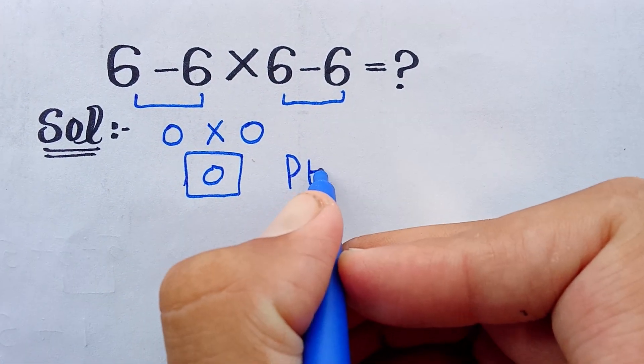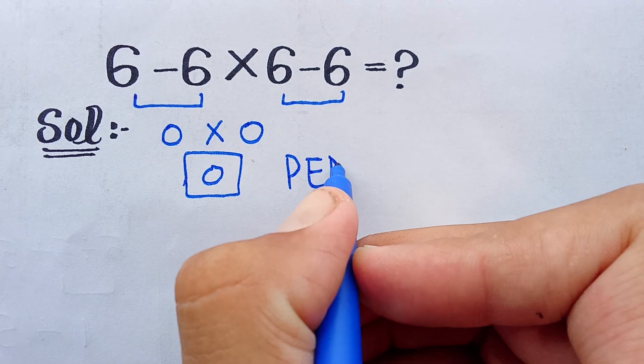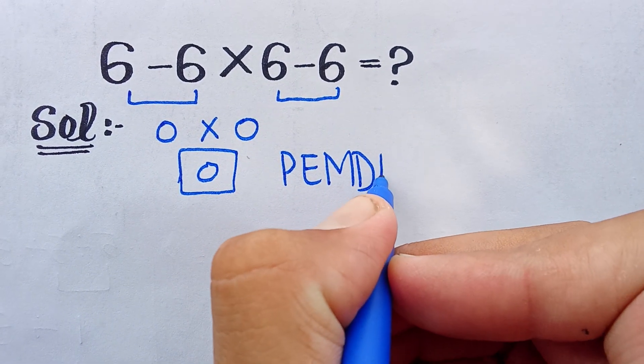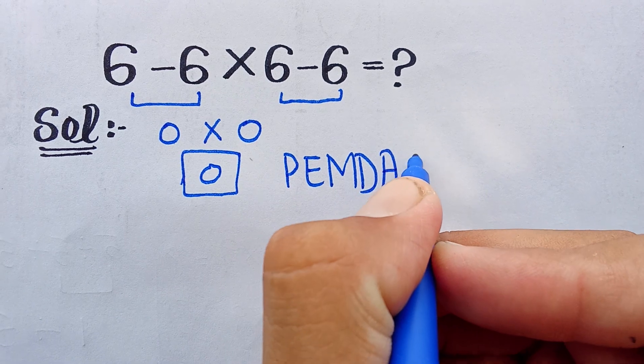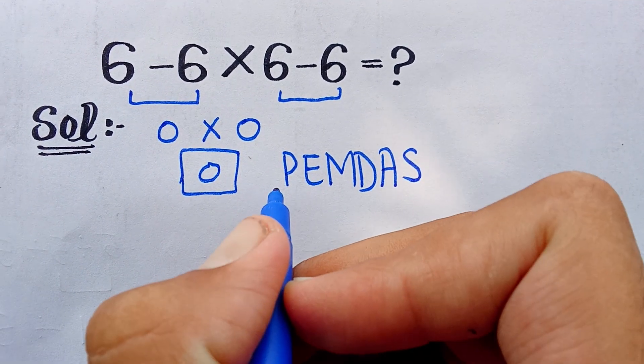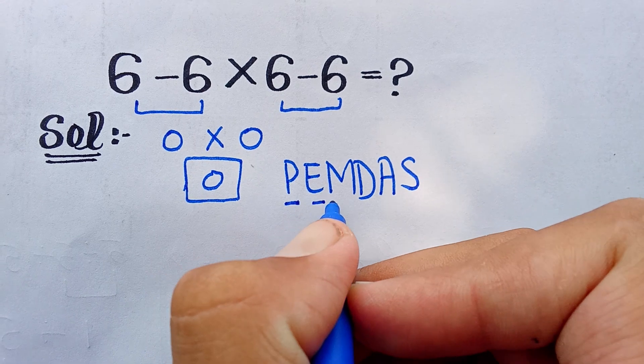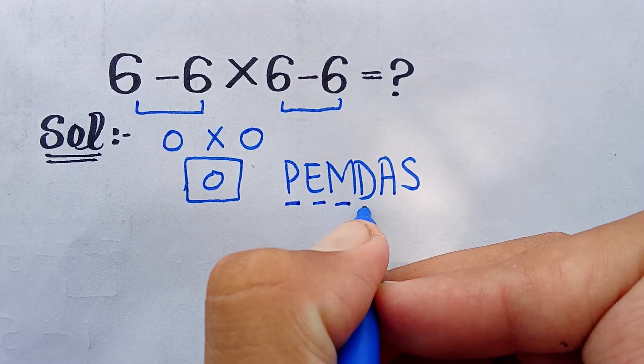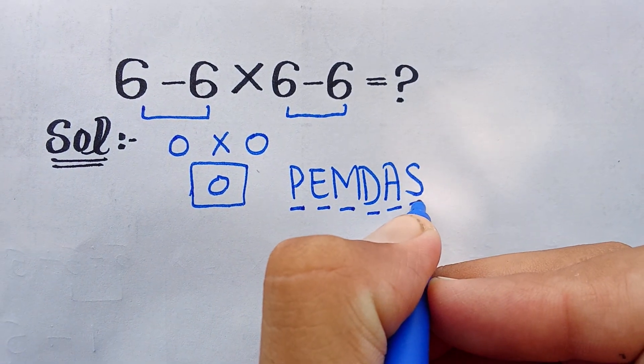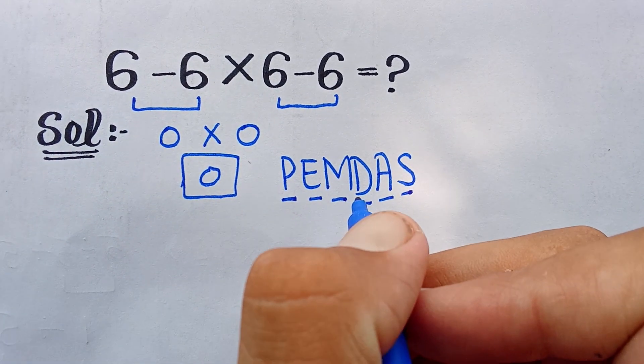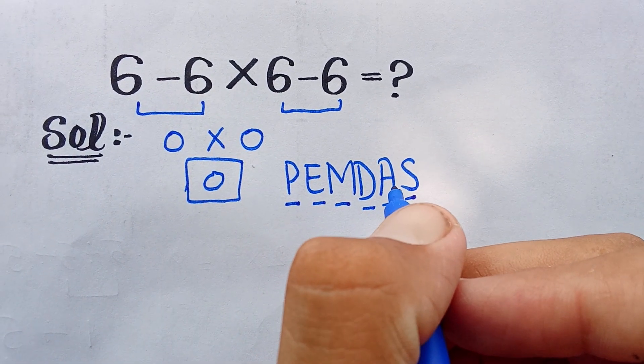E, M, D, A and S. P means parenthesis, exponent, multiplication, division, addition and subtraction. But in this expression only multiplication and subtraction is included.